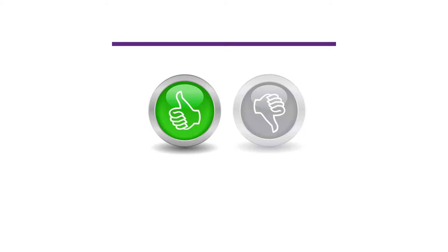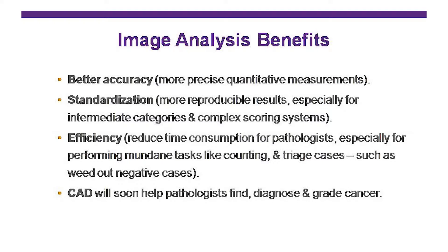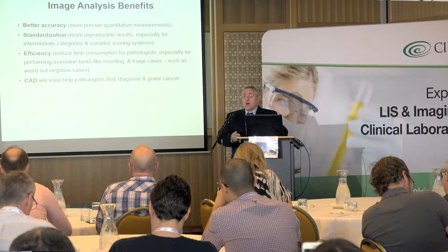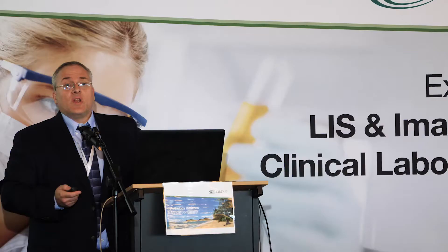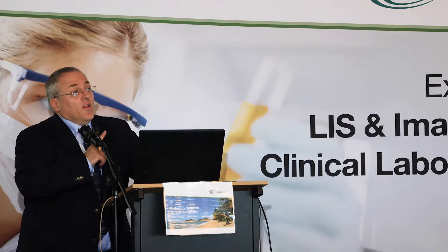Let's look at some of the advances — the thumbs up for computer-aided diagnosis in pathology. Computers can be more accurate than we are; they're much more precise, especially when trying to quantitate things and give an exact score. They're much more amenable to standardization — reproducible. If I gave you all the same image and asked for a score, we probably would not get 100% agreement, but computers would. Especially with indeterminate categories and complex scoring systems like HER2 2+, computer scoring could eliminate the need to send cases out for FISH.